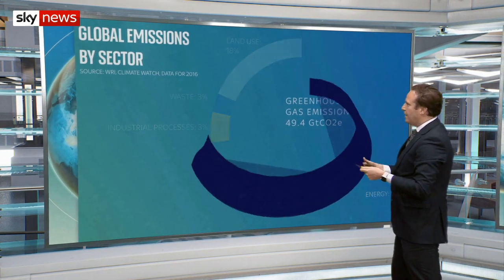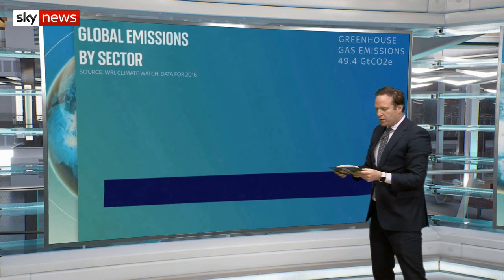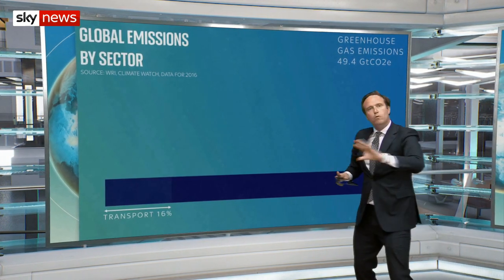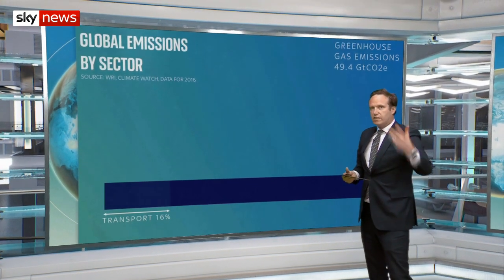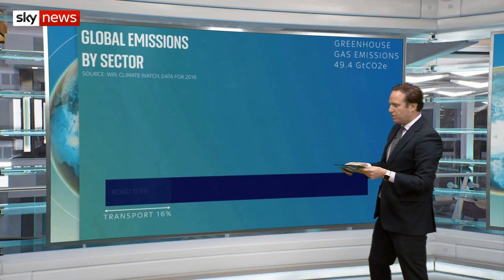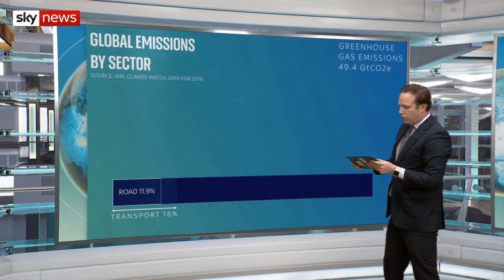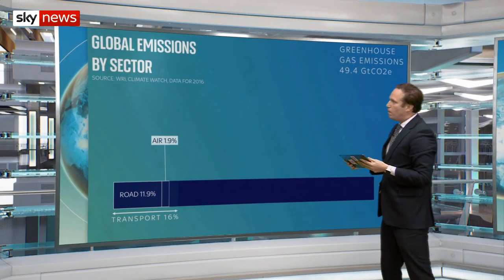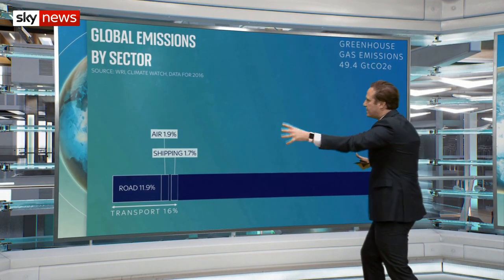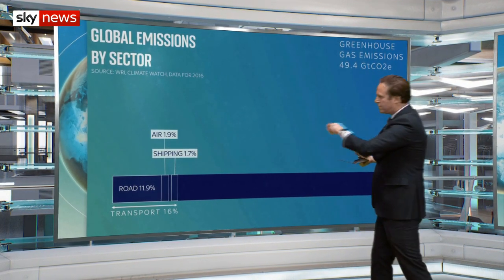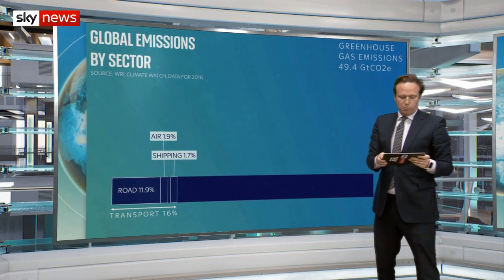Let's take energy and look at where those energy emissions are actually coming from. About 16% of all the energy we're using in the world — which is creating carbon emissions — is transport. The obvious thing is roads: road travel is almost 12%. Then air at 1.9%, and shipping at 1.7%. So 16% of our emissions is down to getting around the world.